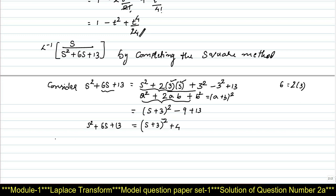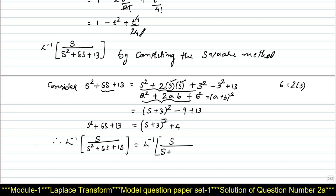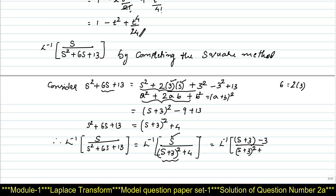Substituting this denominator, the problem becomes L inverse of s / [(s + 3)² + 4]. Now, try to express the numerator s in terms of (s + 3). We can write s = (s + 3) - 3, so this becomes L inverse of [(s + 3) - 3] / [(s + 3)² + 4].